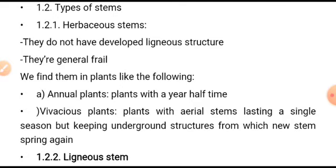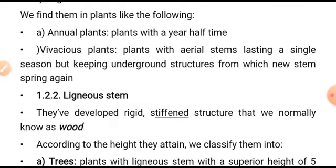Vivaceous (perennial) plants are plants with an ideal stem lasting a single season but keeping underground structures from which new stems spring again. Even though they are not really living in the upper part, their underground parts remain in living mode.